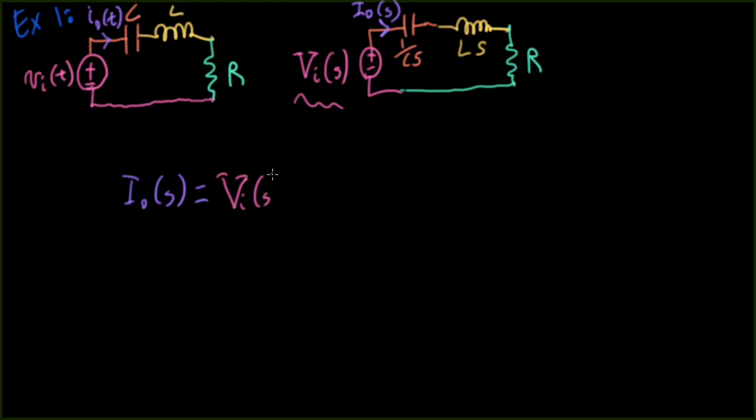So the way I'm going to write that division is to write it as V I S sitting out here in front. And then I'll write it as 1 plus the impedances. So I have 1 over C S plus L S plus R.